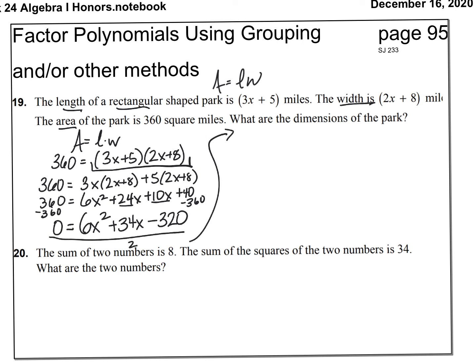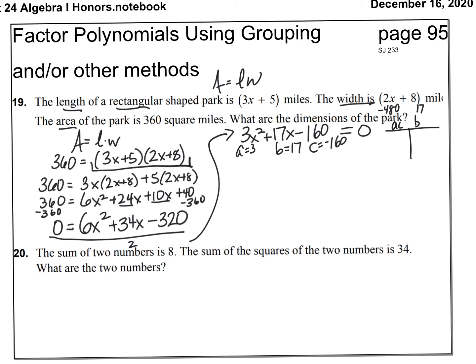Dividing everything by 2 gives 3x² plus 17x minus 160 equals 0. A is 3, b is 17, c is negative 160. A times c is 3 times negative 160, which is negative 480, and I want a sum of 17. I'll pause to find the factors.